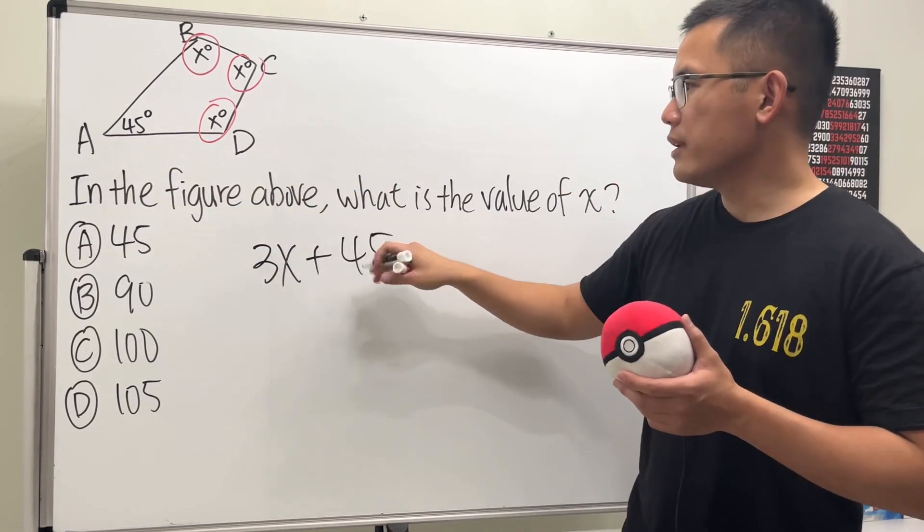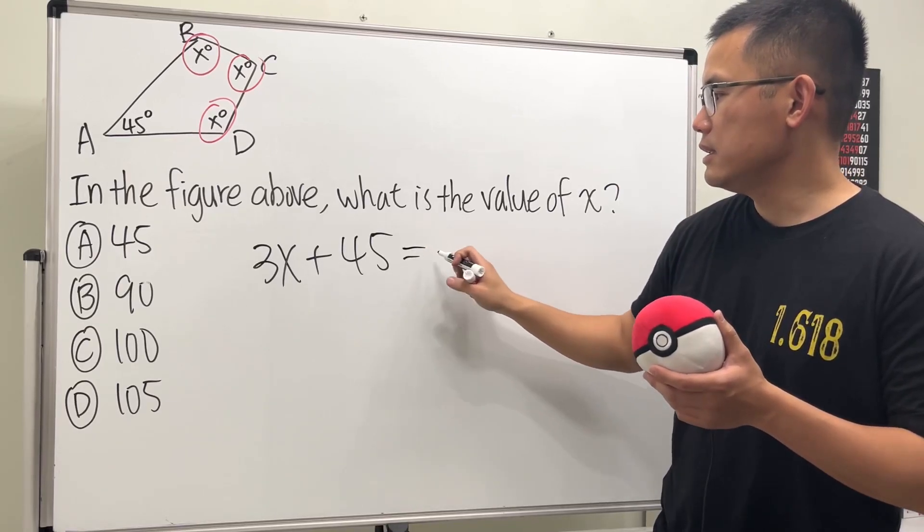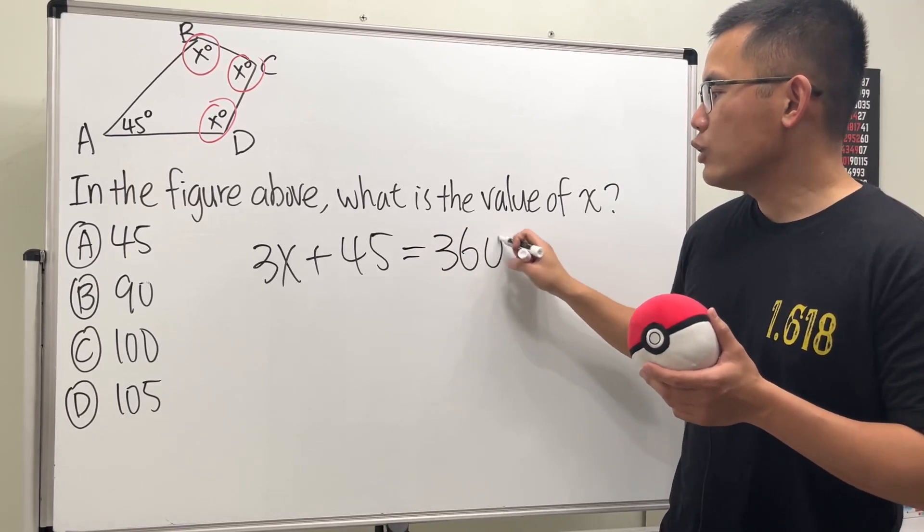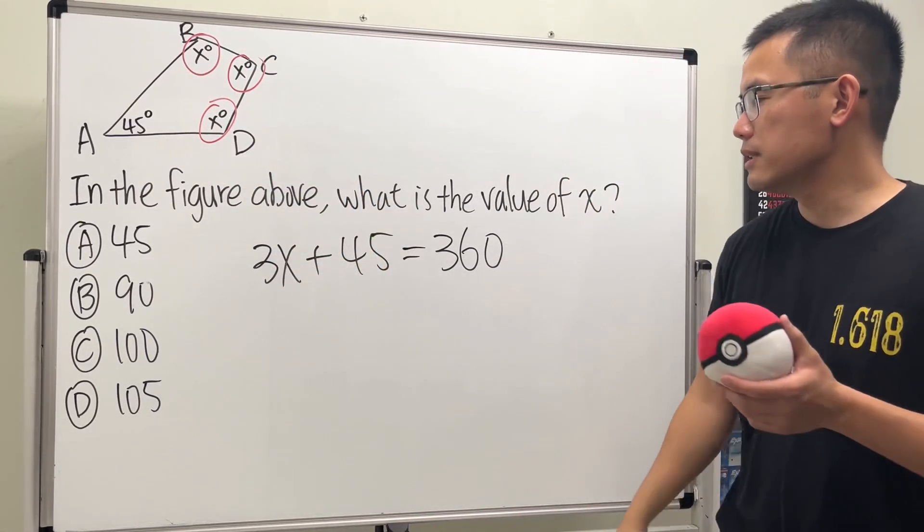And I'm ignoring the degree symbol, because we just need to find out the value of x. And this is equal to the angle sum of the quadrilateral, which is 360.